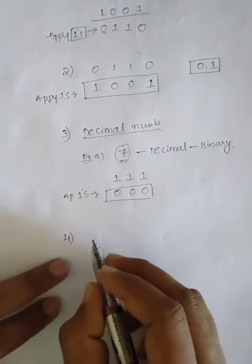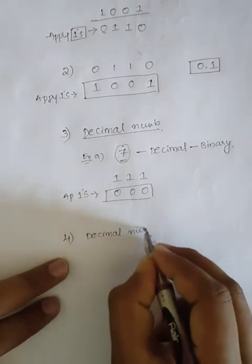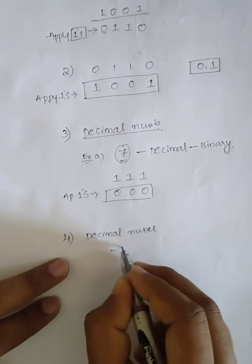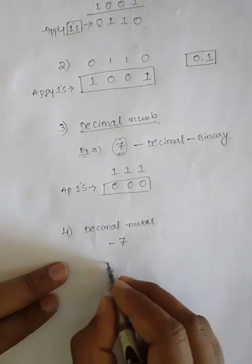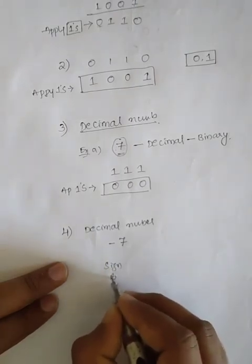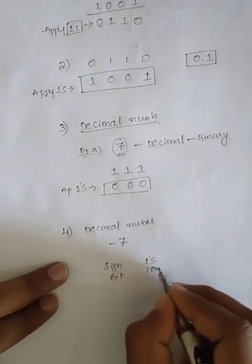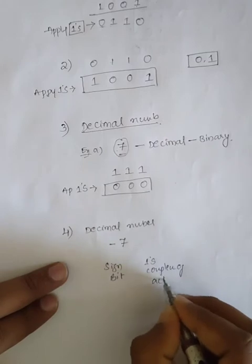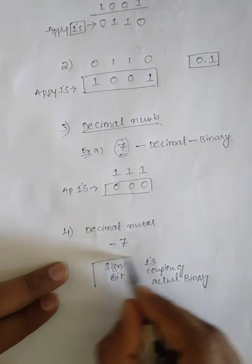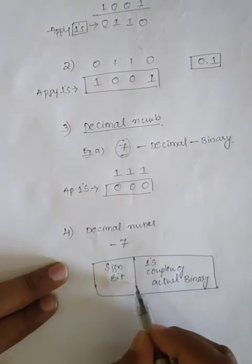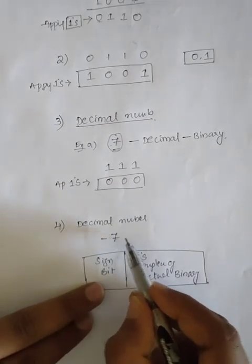Now I will take the decimal number negative seven. The rule for this is: sign bit, then ones complement of the actual binary number. This is the rule we apply when converting a negative decimal number to ones complement.